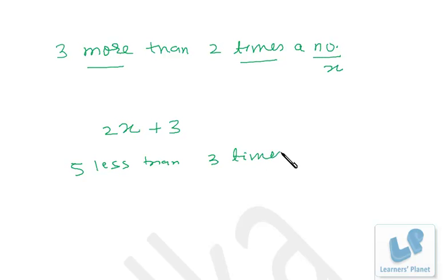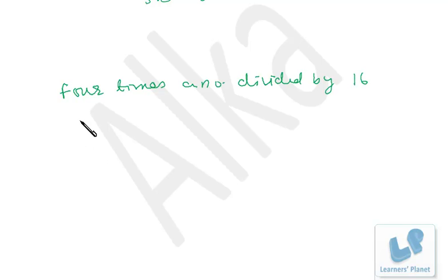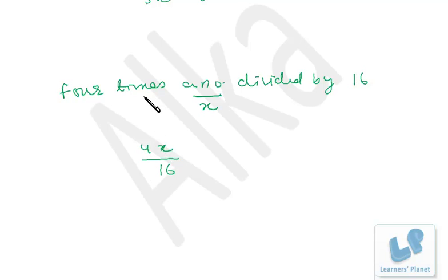Similarly, 'five less than three times a number': the number is x, three times a number is 3x, and five less gives 3x − 5. And '4 times a number divided by 16': x is the number, 4 times a number is 4x, divided by 16 gives 4x ÷ 16. Here multiplication and division — two operations — are being used.